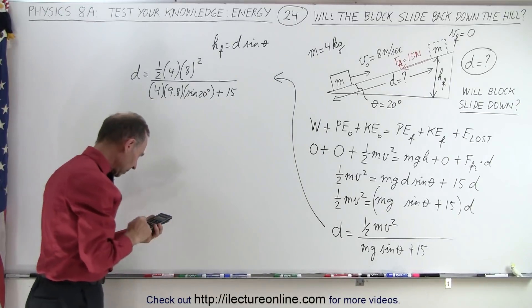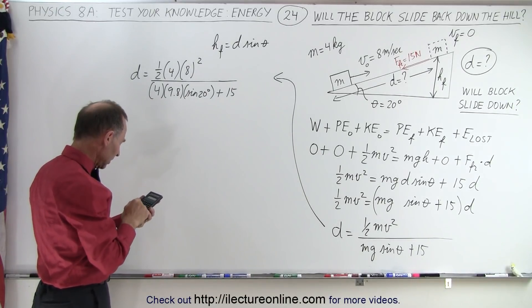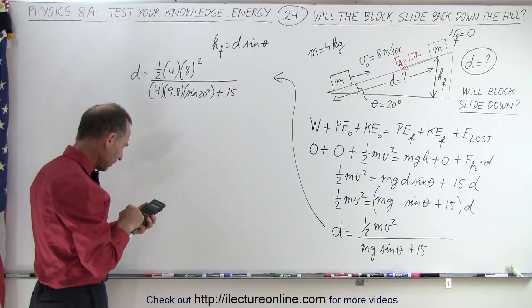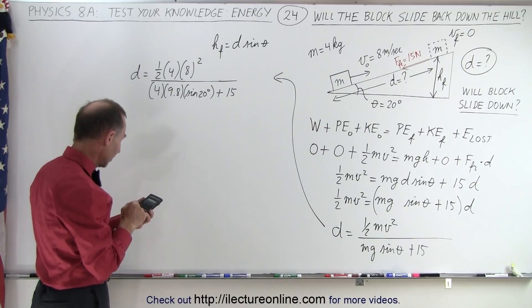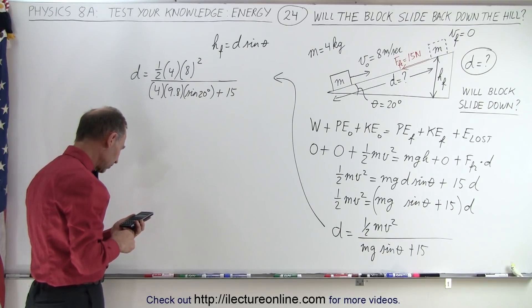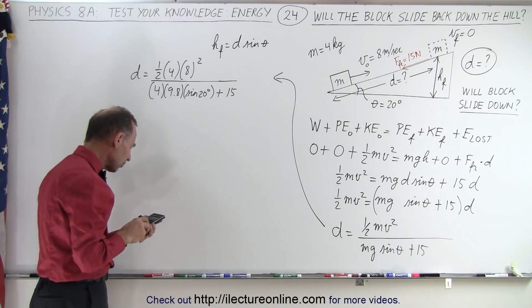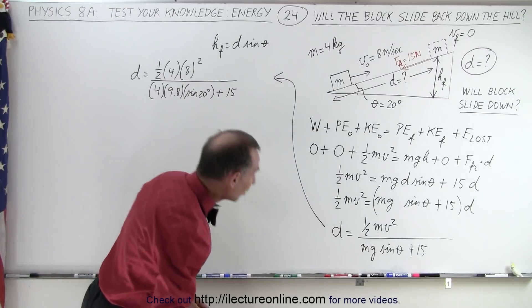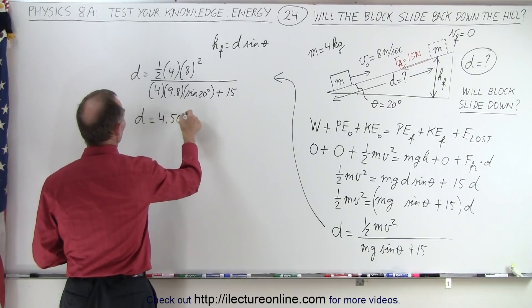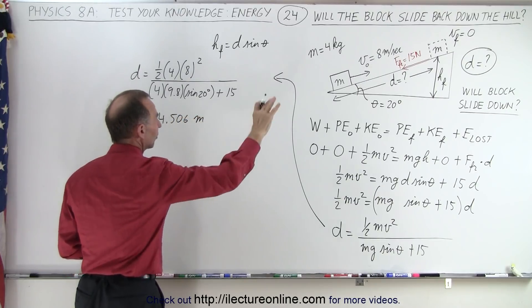Alright, let's see what that's equal to. So we have 4 times 9.8 times the sine of 20 equals, add 15 to that, move that to the numerator, that multiplied times 0.5 times 4 and times 8 squared which is 64 equals, and that gives us 4.506. So distance equals 4.506 meters. That's the distance up the hill.